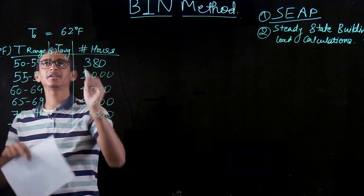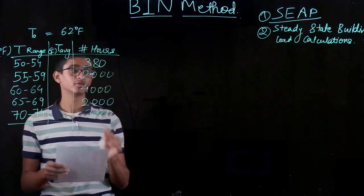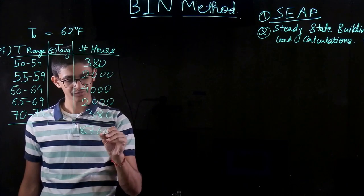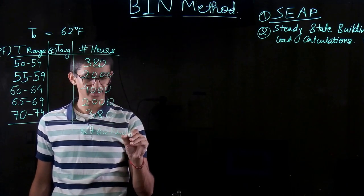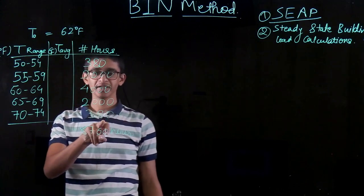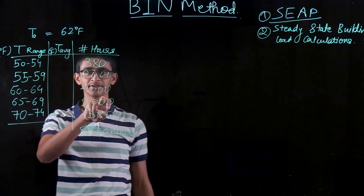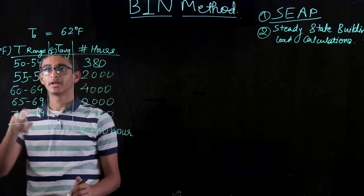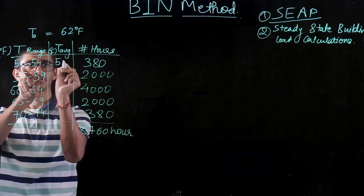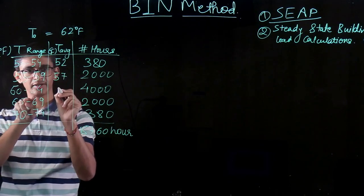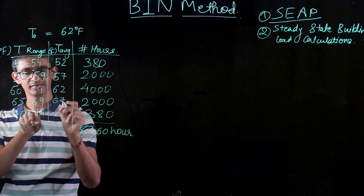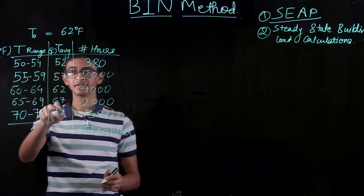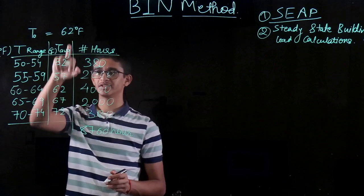The average outside temperature is 62°F. These hours sum up to 8,760, which is the total number of hours in a year. The average temperature for each bin is: 52°F for the first bin, 57°F for the second, 62°F for the third, 67°F for the fourth, and 72°F for the fifth. I've split the hours in such a way that the weighted average temperature still comes out to 62°F. Now the idea is we do more calculations — one per bin — instead of just one for the whole year.